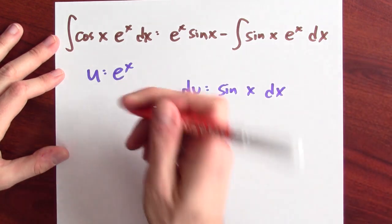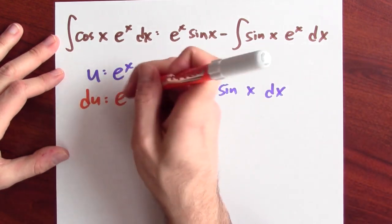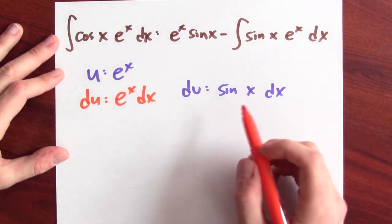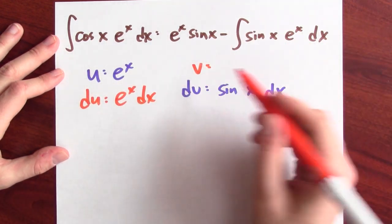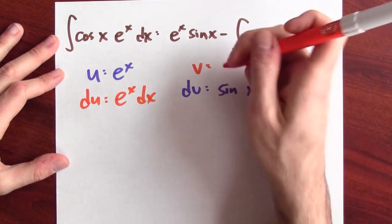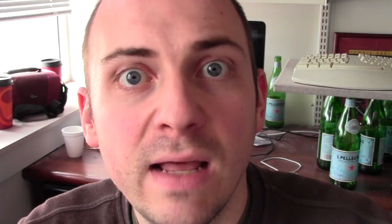And in that case, if u is e to the x, then du is e to the x dx. And if dv is sine x dx, well, I've got lots of choices for my anti-derivative, but I'll have v be minus cosine x.